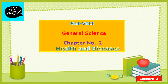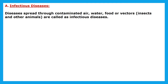A very good morning dear children. Today we are going to see the remaining part of chapter number 2, Health and Diseases. Let us see what is meant by infectious diseases. Diseases spread through contaminated air, water, food, or vectors such as insects or other animals are called infectious diseases. Contaminated air, water, and food means polluted air, water, and food that is not good for health — from that we are getting diseases, and such types of diseases are called infectious diseases.